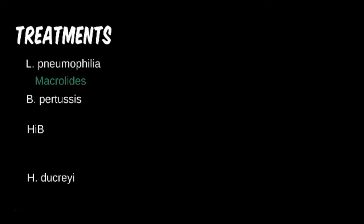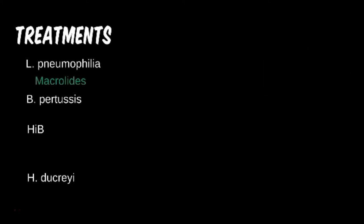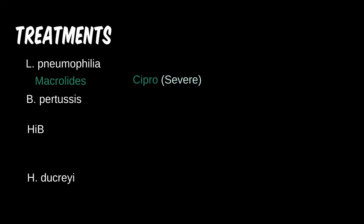Legionella is one of the bugs that falls into the atypical pneumonia category. An elderly patient with respiratory issues, or a business person back from recent travel, can lead us to think of Legionella. On the USMLE Step 1, you're more likely to see first line treatments; however, cipro for severe disease is also worth knowing. In general, only consider other options if the first line is not listed.